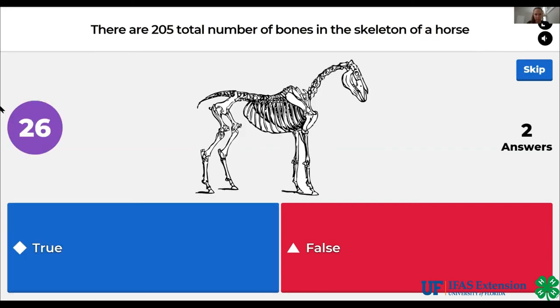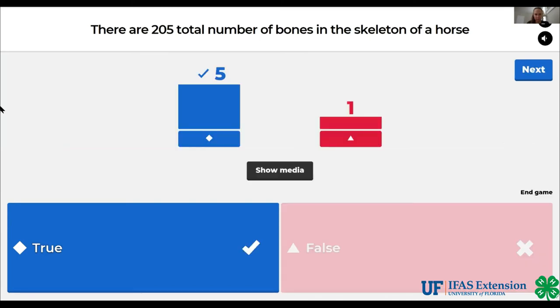True or false? There are 205 total bones in the skeleton of a horse. The answer is true.